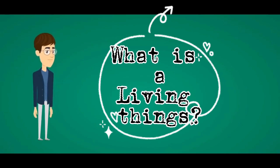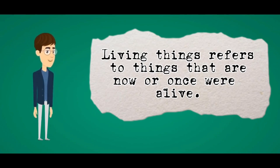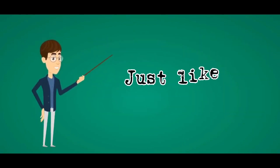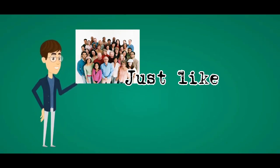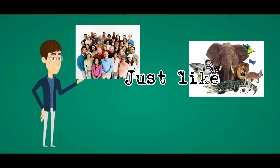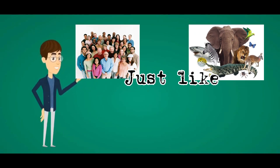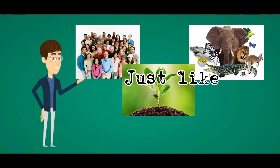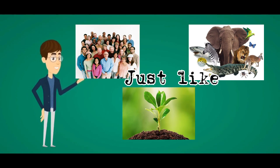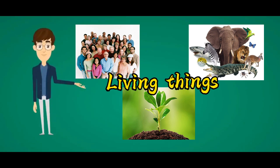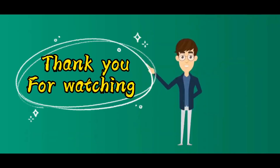But what is a living thing? A living thing refers to things that are now or once were alive. Our best examples are humans, animals, and even plants. So it means that people are living things, animals are living things, and plants are living things.